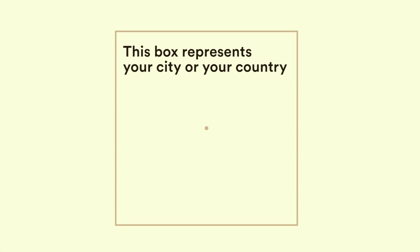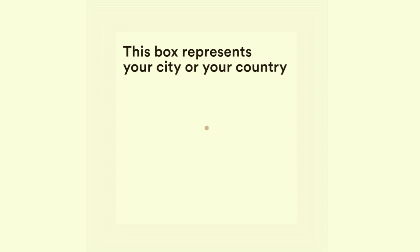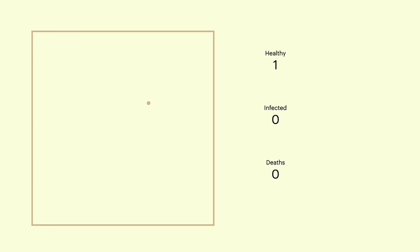This box is our universe. You can think of this box as your country, or your city, or even your local community. And this is you — the healthy citizen represented as a dot in the center. Let's give you some life so that you can walk around the city. Now, let's add some trackers on the right that help keep a count of people by their health status: healthy, infected, or dead. But wait, there's just one person here.